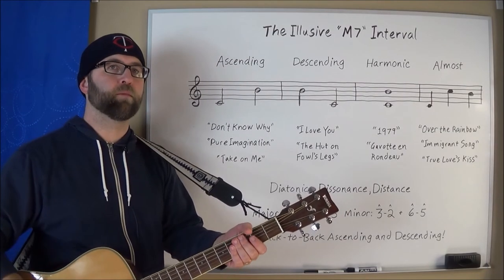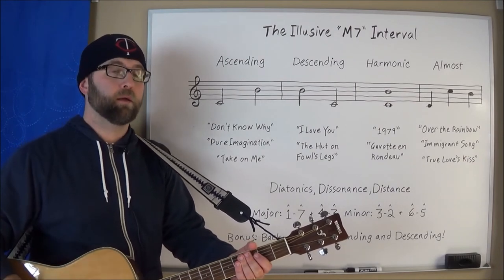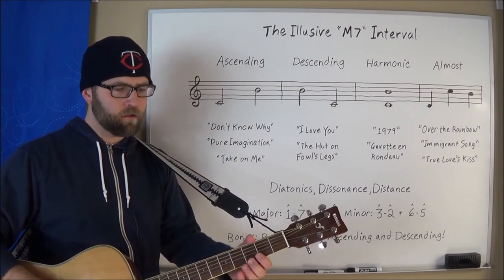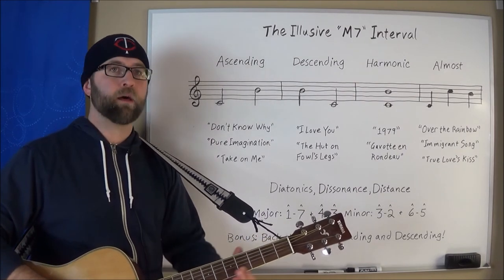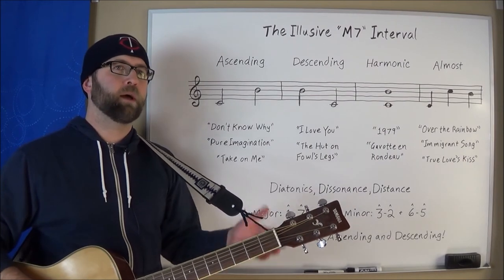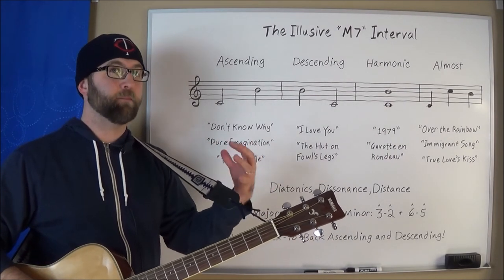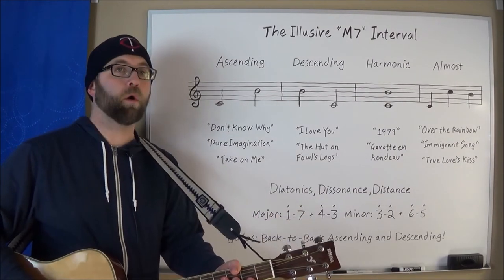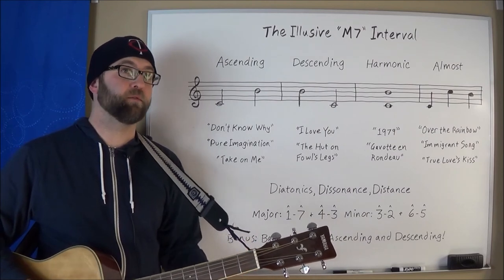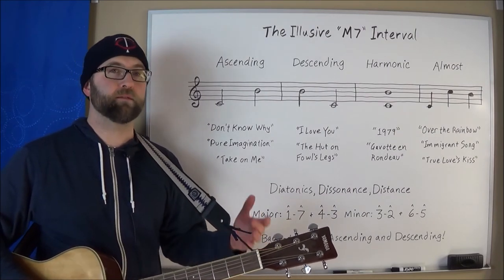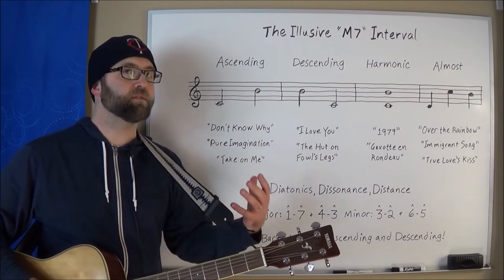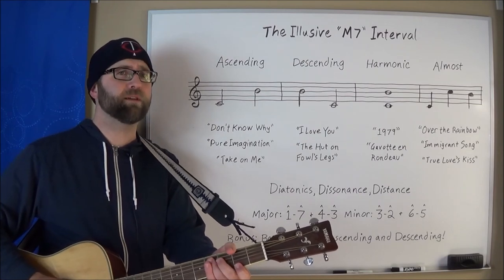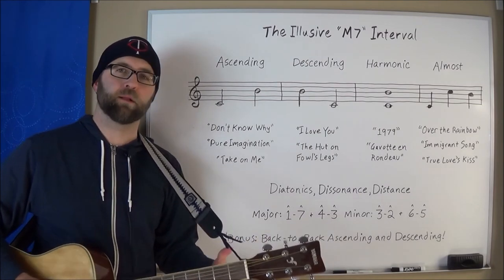Robert Plant does one of these in Led Zeppelin's 'Immigrant Song' — he lands on that major seventh interval that we've now grown to understand and love. One more 'almost' interval is from Disney's Enchanted — 'True Love's Kiss': 'I've been dreaming of a true love's kiss.' Just like 'Over the Rainbow,' but a little bit faster.